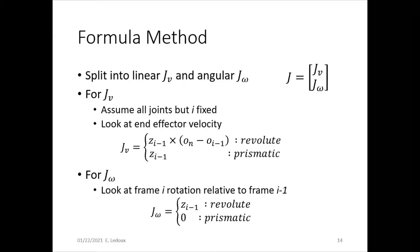For the angular, a prismatic joint would have no angular velocity, so that's just zero, and the revolute joint would just have a velocity around that z-axis.